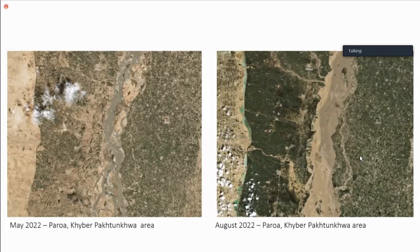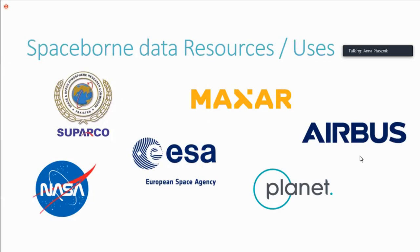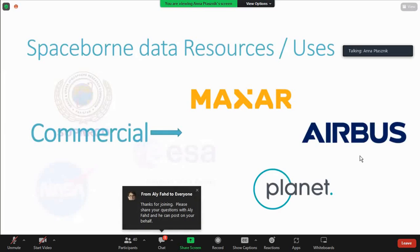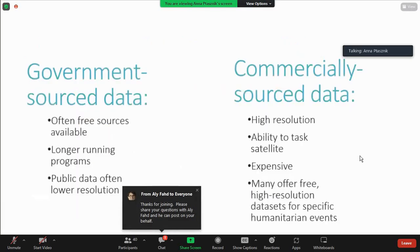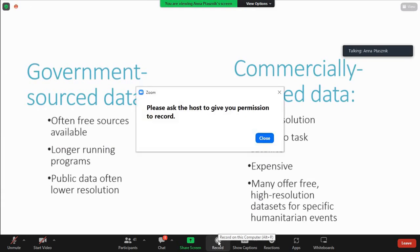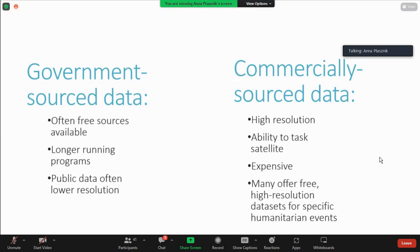There are a lot of organizations that provide data. We have government organizations who capture and provide this data. Then we have commercial data. In the case of government-sourced data, there are often free sources available with long-running programs — satellite imagery that goes back to the 1980s that is public. Though it's at a low resolution typically, commercially sourced data tends to be higher resolution. Commercial providers also offer the ability to task satellites — you can pay these companies to point their satellite at a location and take photos for you.